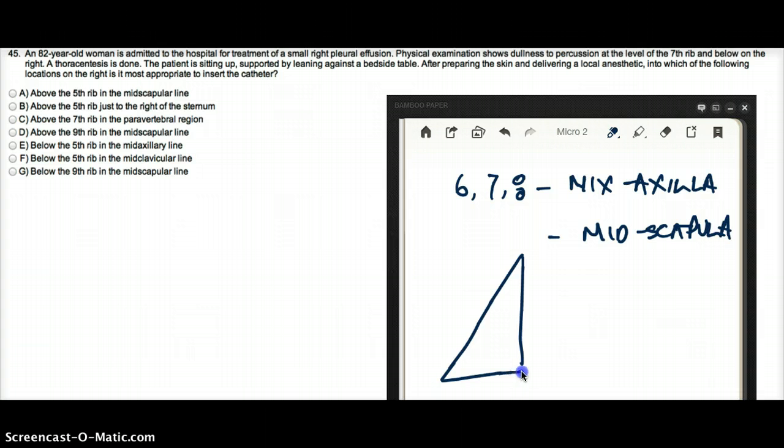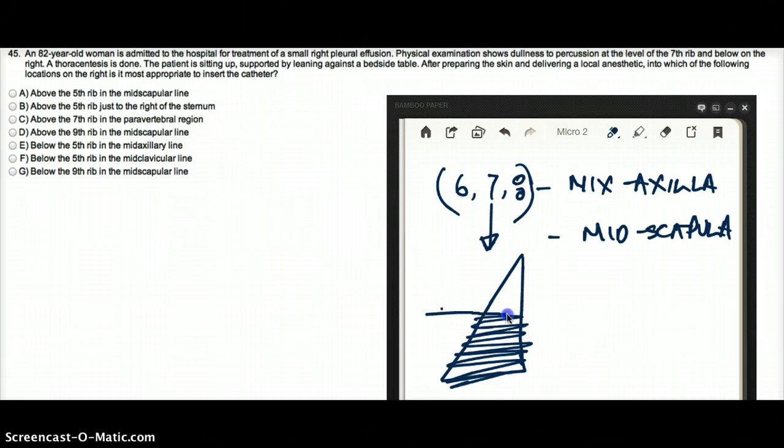Now imagine that the lung has pleura here, and we want to get this out. So if we go above this level, we might not reach the pleural effusion. And this patient says 7th and below, so we cannot go above 7. Then we are not going to really get, let's say this is 7. If we do thoracentesis above 7, obviously that doesn't make sense. It has to be 7 and below.